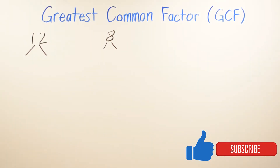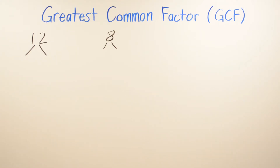In this video we're going to be talking about greatest common factor. The abbreviation for greatest common factor is GCF. Before we start, here is a small definition: the greatest common factor is the biggest number that divides evenly into each number in a given set of numbers.